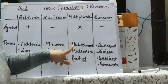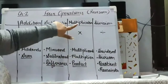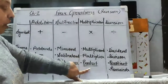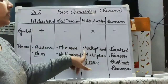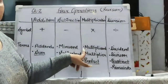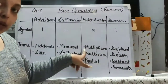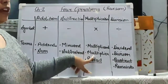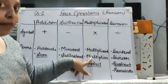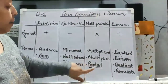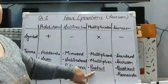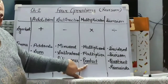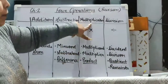Next we have done 3 terms in multiplication: multiplicand, multiplier, and product. Multiplicand is the greater number that will be multiplied. Multiplier is the smaller number that will multiply, and the product is the outcome — or we can say the result — of the multiplication.